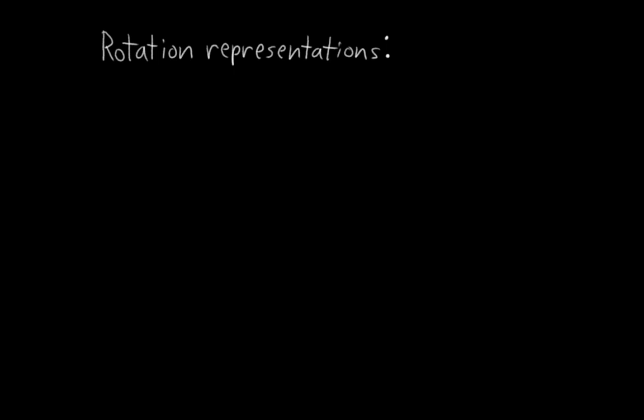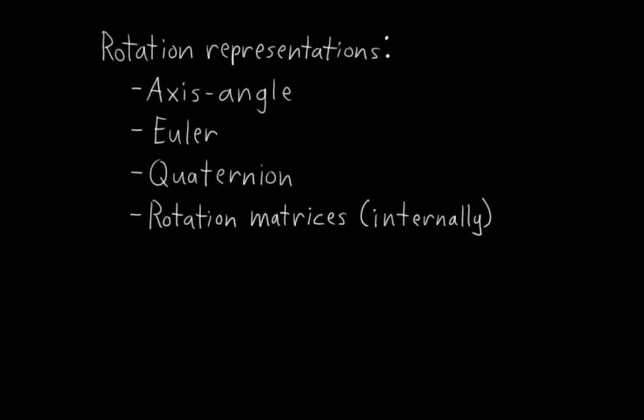Blender has three rotation representations that we can choose from as a user: axis angle, Euler, and quaternion. Internally, Blender also uses rotation matrices. These are not directly accessible to the user, so I won't go in-depth into them, but I'll briefly touch on them at the end of all of this.